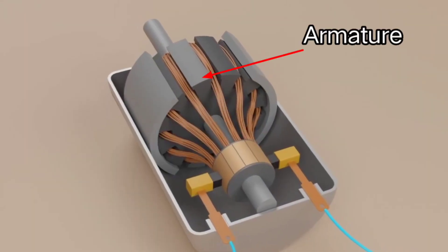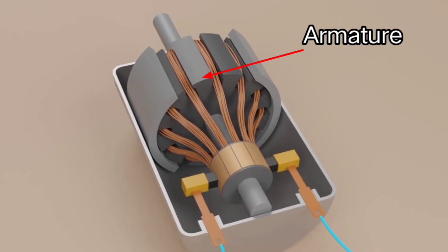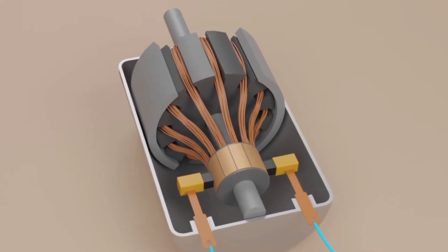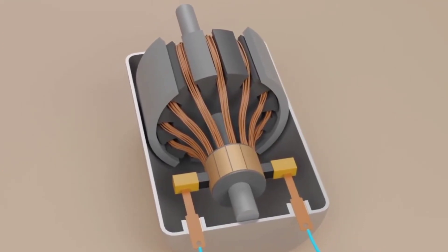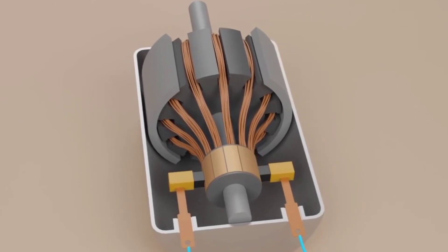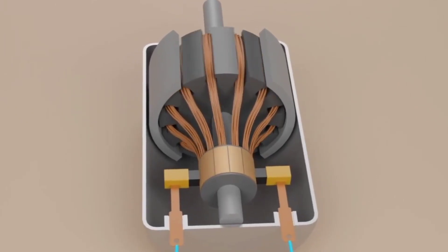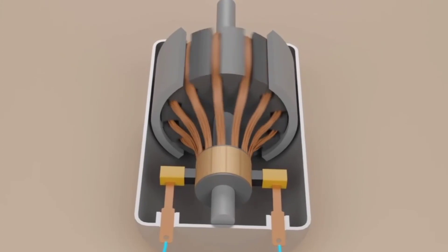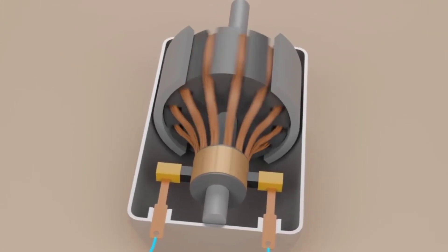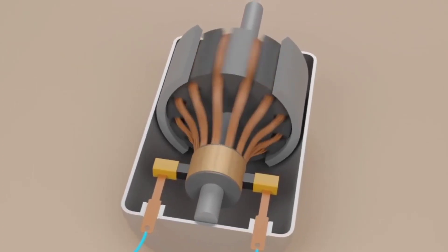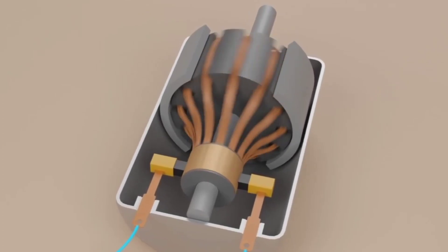In a DC motor, the rotor is also known as the armature. The armature is a cylinder of magnetic laminations that are insulated from one another. It is perpendicular to the axis of the cylinder, rotates on its axis, and is separated from the field by an air gap.